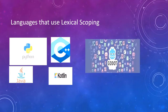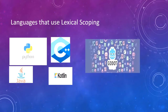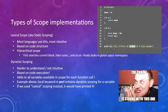Languages that use lexical scoping by default include Kotlin, C++, Java, Python, and GDScript — the usual stuff. Languages that can use dynamic scoping include Perl, Lisp, Scala, Racket, and Clojure. In those languages, dynamic scoping is not on by default — you have to use some kind of keyword or structure to enable it, as shown here with the 'local' keyword.